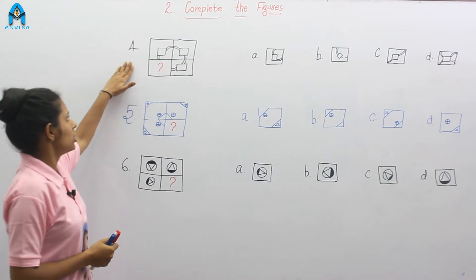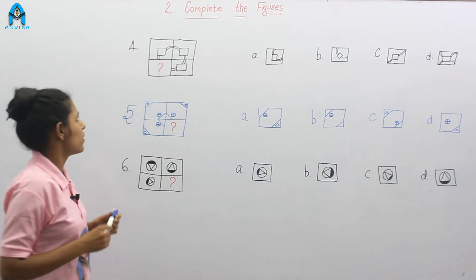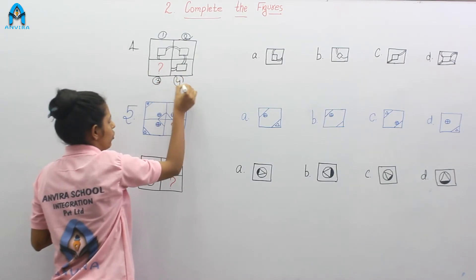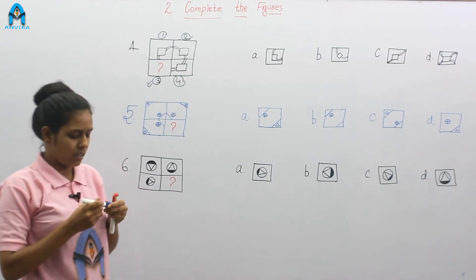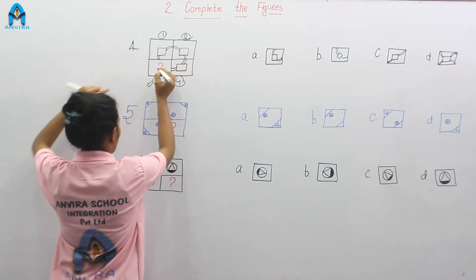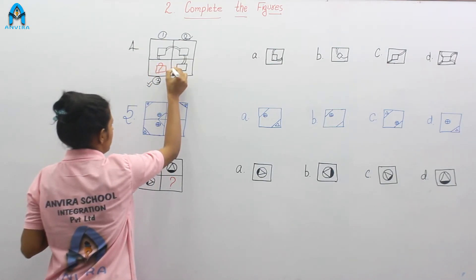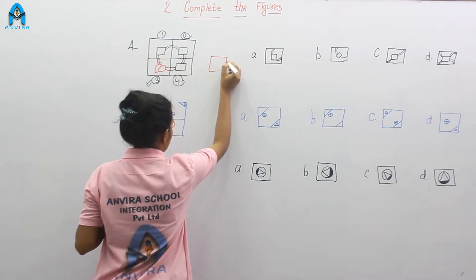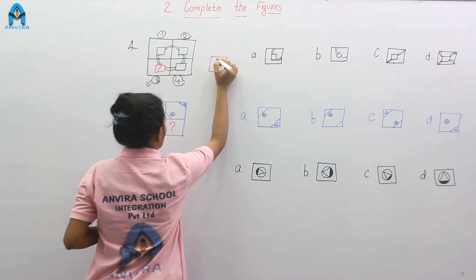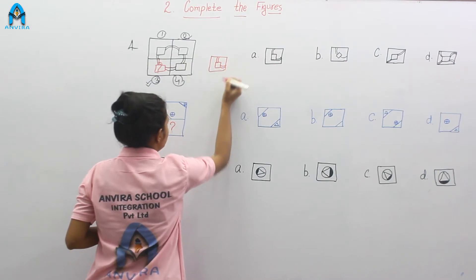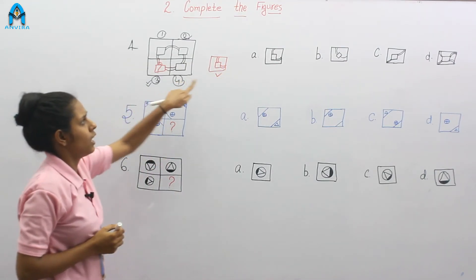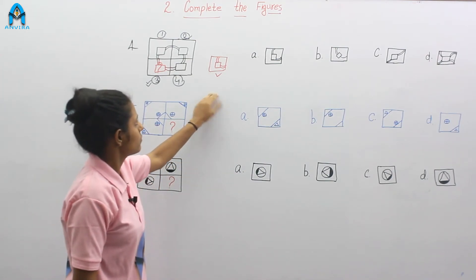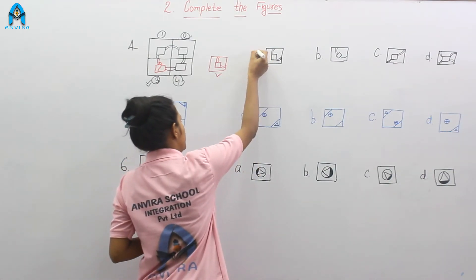Let's go to our next question, question number 4. In this question, this figure is divided into 4 parts: 1, 2, 3, and 4. And this third part is missing. Now complete the figure — just like this square, make a square, then a line, then this line. The figure is a square inside, with 2 lines up and 2 lines on the sides. Now look at the options and observe which option is our correct option. Option A? Yes. Our correct option is option A.